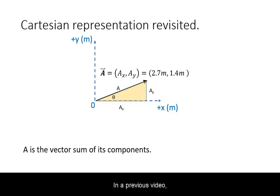In a previous video, you have learned how to represent a vector in component form in Cartesian coordinates. The total vector was the vector sum of its components represented in magnitude form.